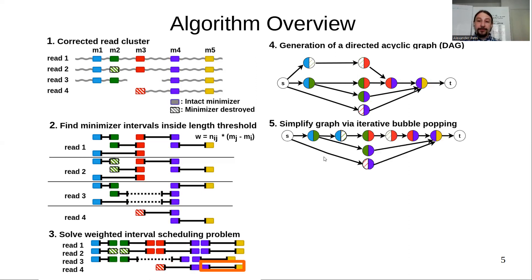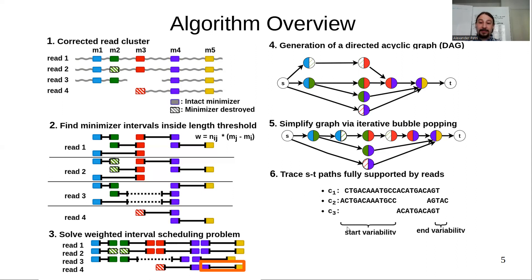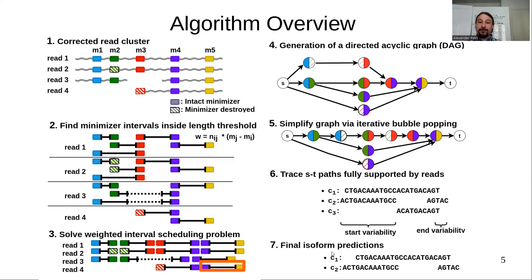The next step is to simplify the graph via iterative bubble popping. We then trace the S-T paths that are fully supported by reads, meaning we find all paths supported by at least one read through the whole path. With that, we would find three consensuses in our dataset. However, there still exists high start and end variability between those consensuses, which are also possible sequencing artifacts. Due to that, we perform a post-processing step that generates the final isoform predictions — two predictions in this dataset.